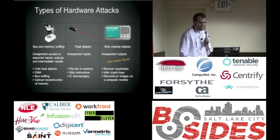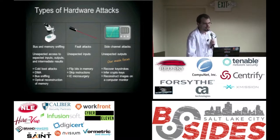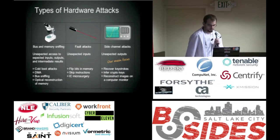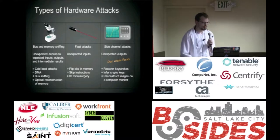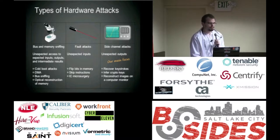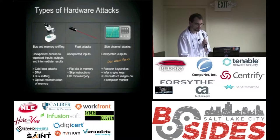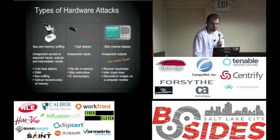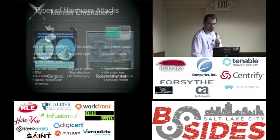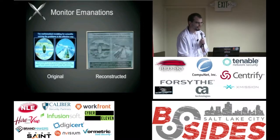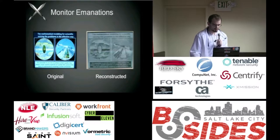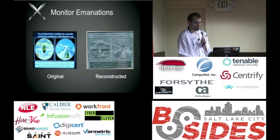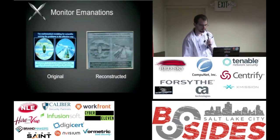There are lots of different kinds of hardware attacks. I'm organizing them as: attacks that exploit access to information we expect to be there but don't expect someone else to have — like sniffing a bus connection between your CPU and memory. Then there are fault attacks that exploit unexpected inputs, like shooting a laser at a chip to flip bits. And there are side channel attacks that target unexpected outputs, which get most of the attention. A classic example is reconstructing images on a computer monitor from the radiation it emits. On the left is what's on screen, and on the right is what they picked up from across the room by recording electromagnetic radiation.